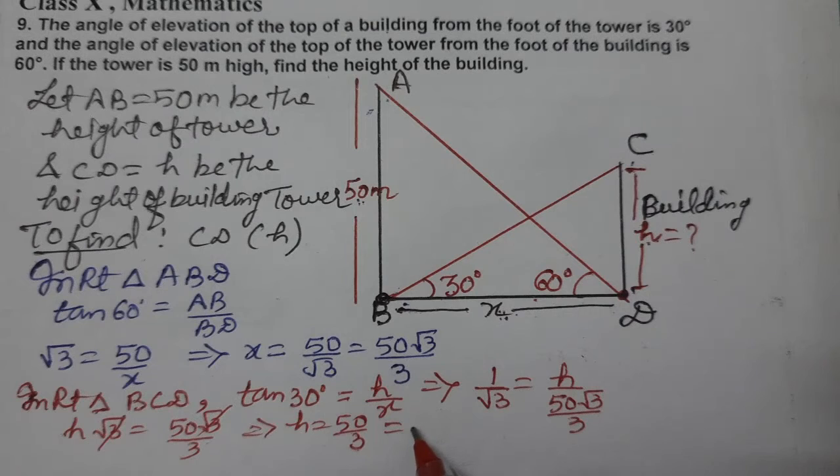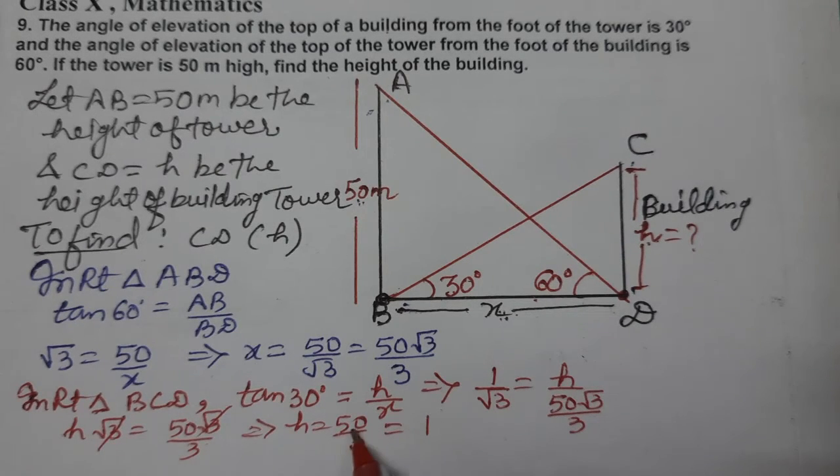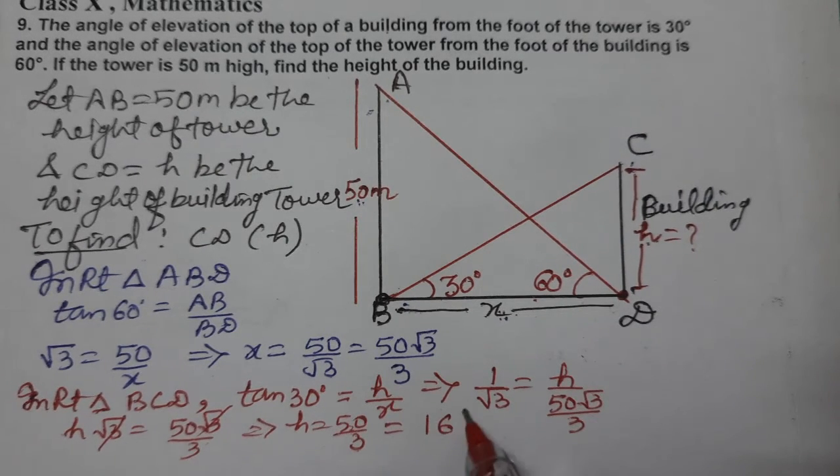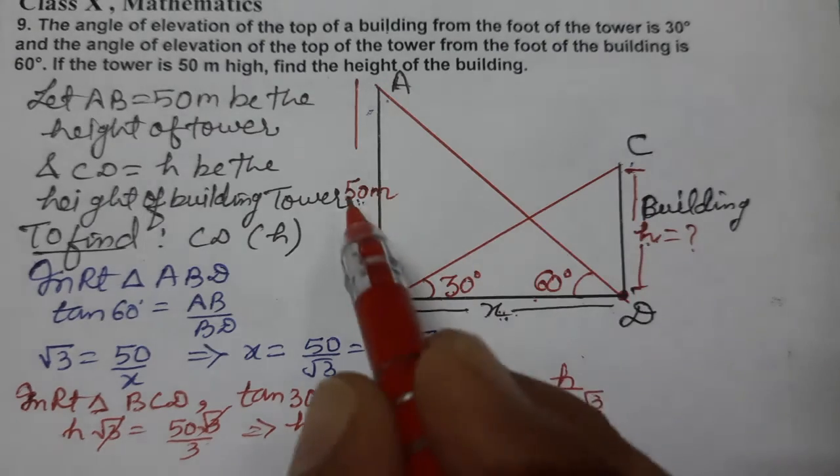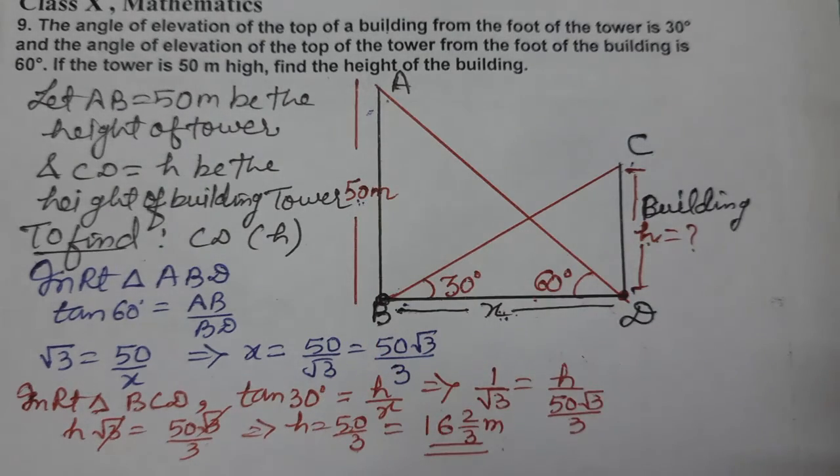Building height 50 by 3 means 16.67 meter. This is the height of the building. Tower is 50 meter given. So I hope you understood. Thank you so much for watching the video.